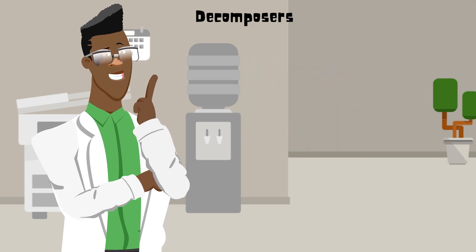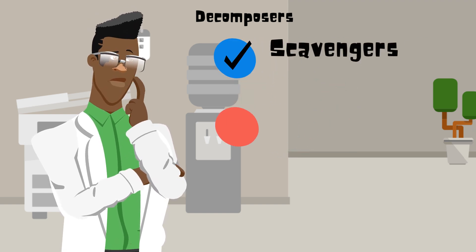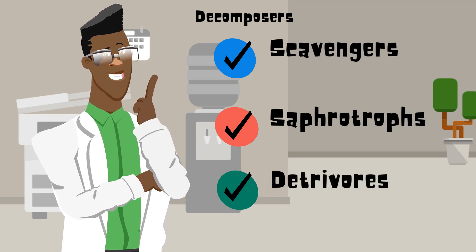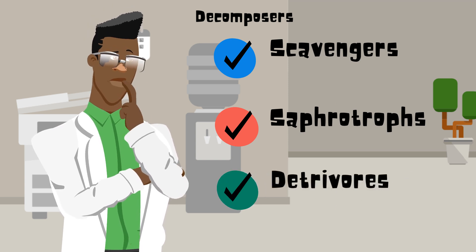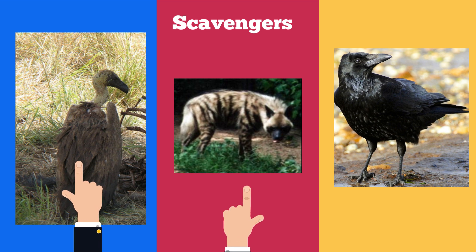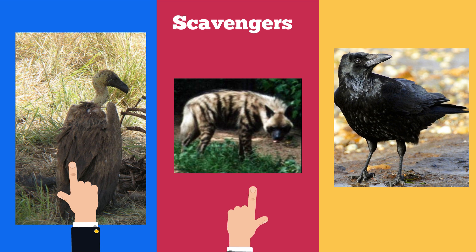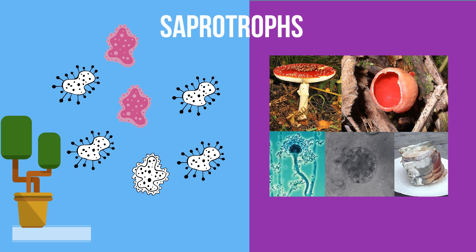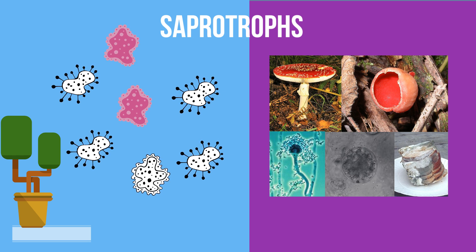Next are decomposers, or the recyclers. There are three types: scavengers, saprotrophs, and detritivores. Scavengers are heterotrophs that look for once-living plants and animals found in their habitat. Some common examples are vultures and a striped hyena. Once a plant or animal has expired, scavengers enjoy a tasty meal. Saprotrophs are individuals like bacteria and fungi that feed on organic material by breaking down this material with enzymes and then absorbing the nutrition.